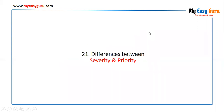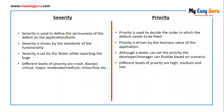Let's see the differences between severity and priority. Severity is used to define the seriousness of the defect on the application or build, while priority is used to decide the order in which the defect needs to be fixed. This is the very basic difference between severity and priority.